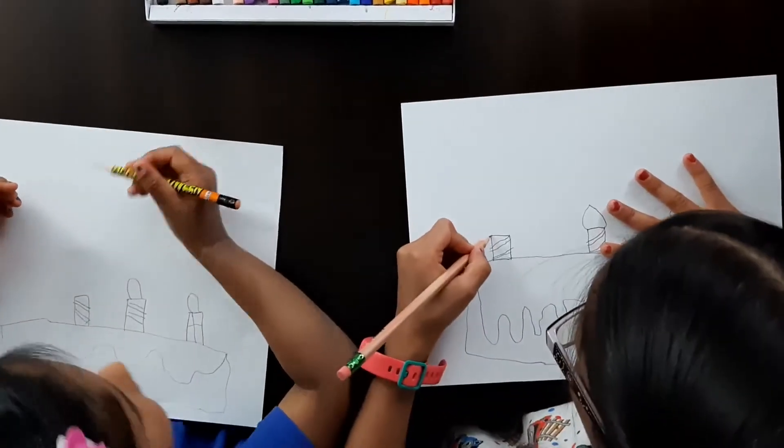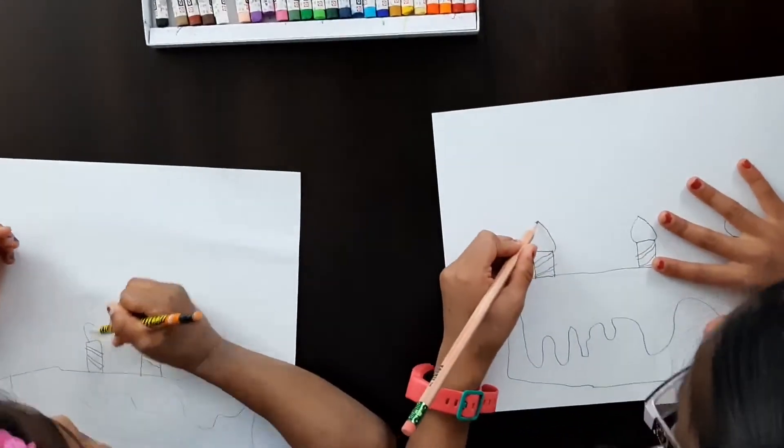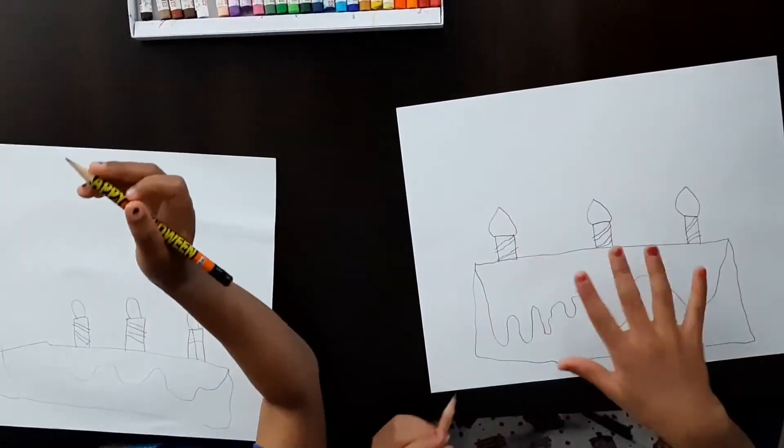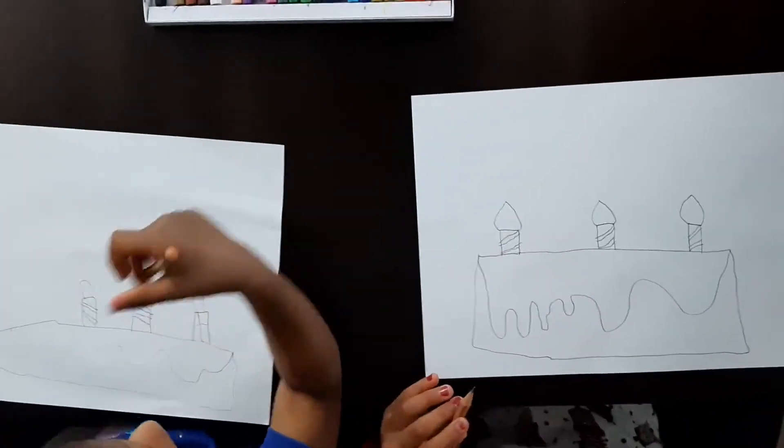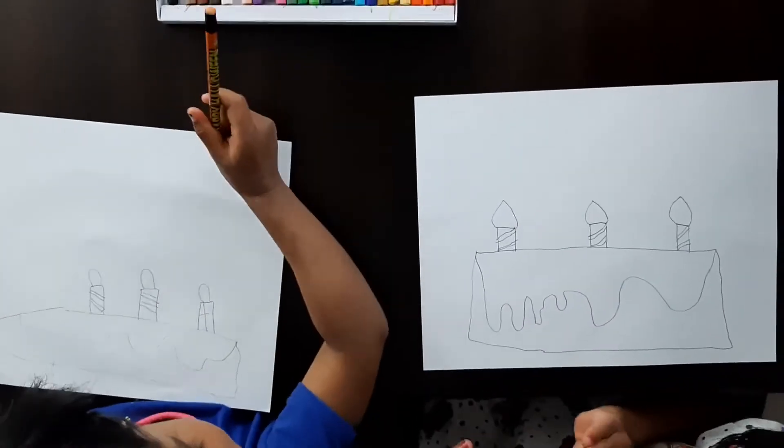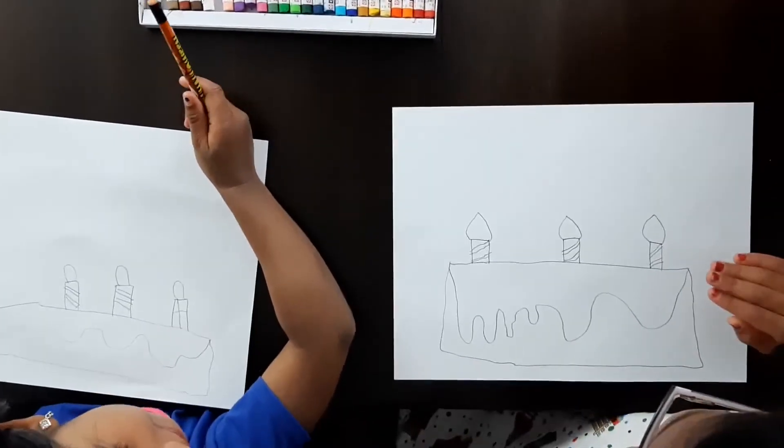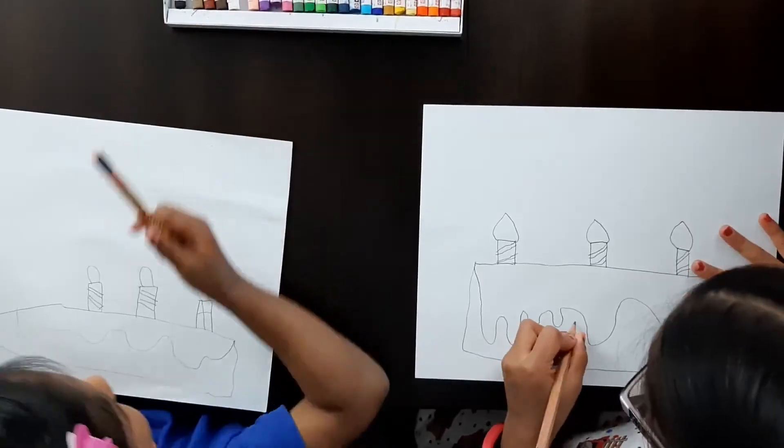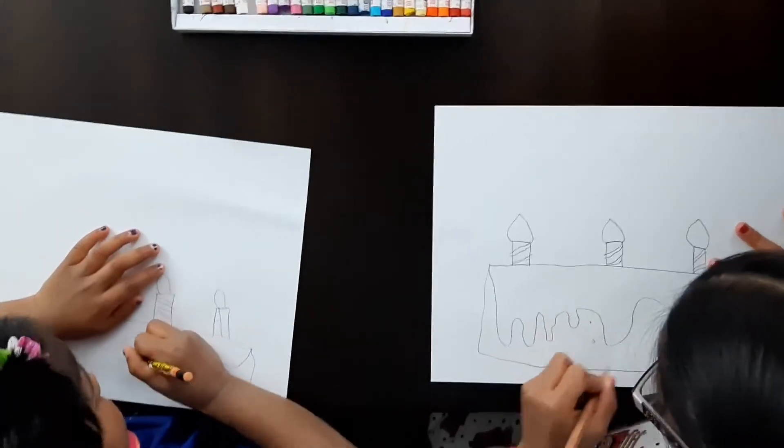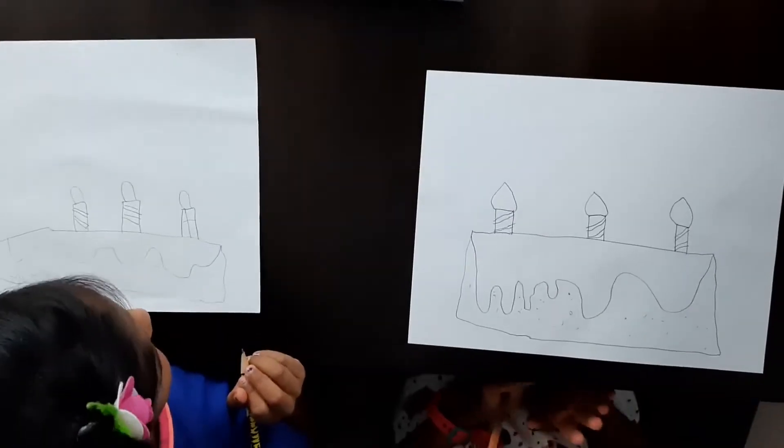Now we're going to add a big circle. Just for the candle, we're going to add a big circle. And now, what's the way we're going to do? Color. No, we're not done yet. We need to add sprinkles. That's the most yummiest. Just draw dots everywhere. That's our cake.